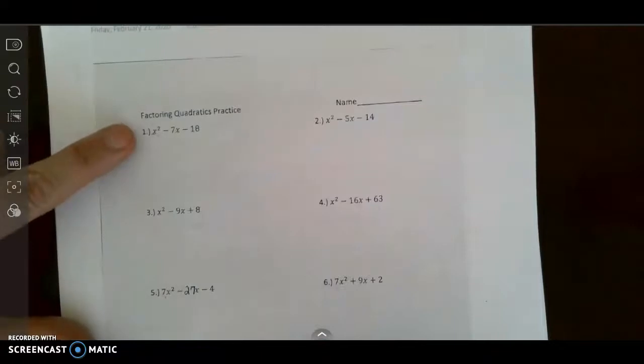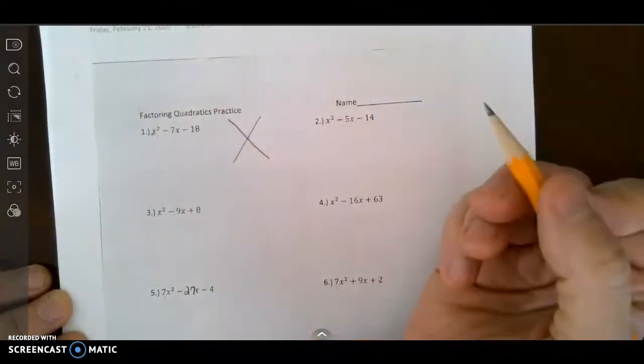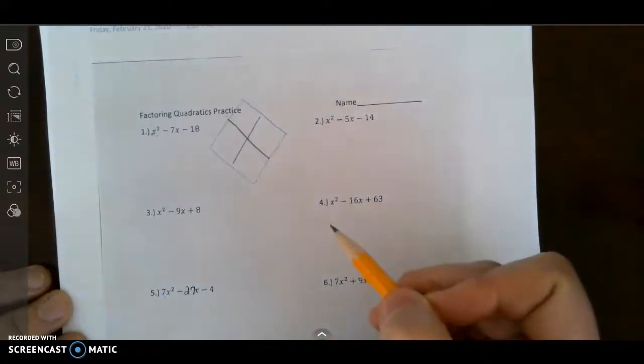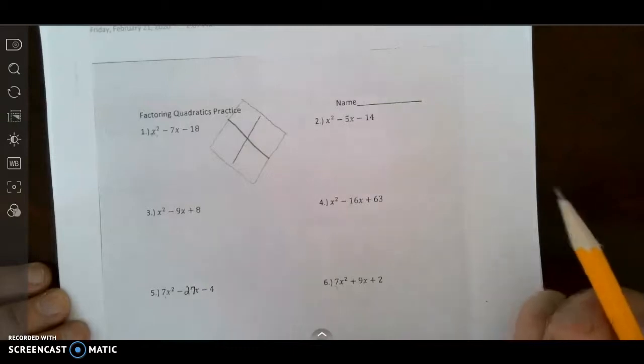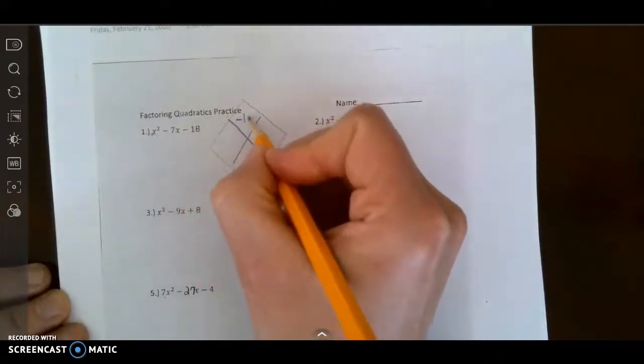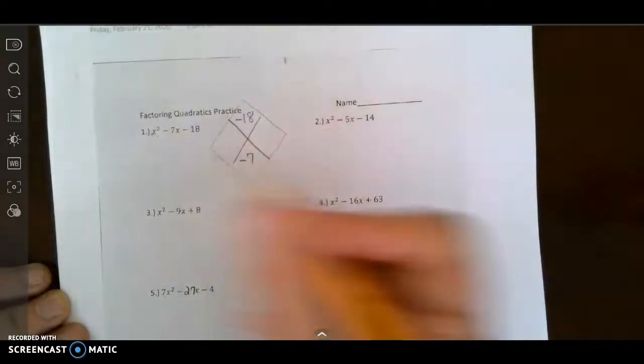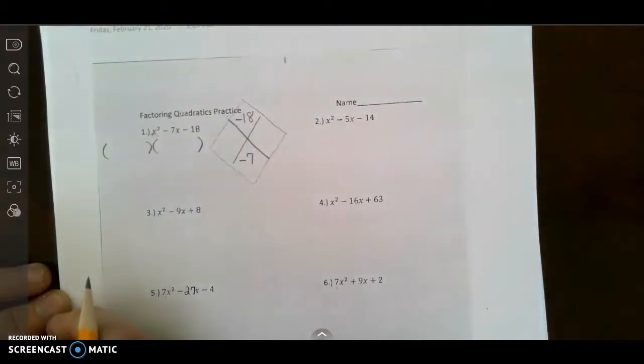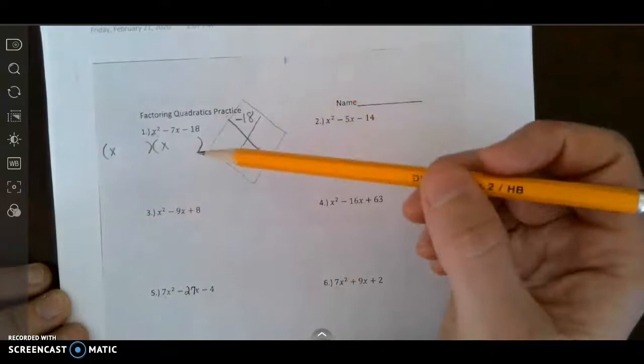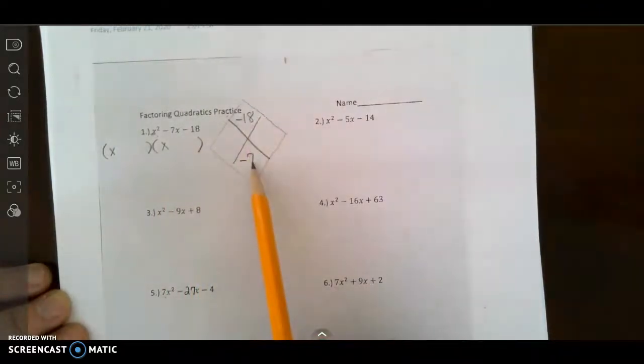So let's talk about how to do ones like number 1. When I don't need a leading coefficient, I teach a method called the diamond method. I usually just draw an x, and in the top of the diamond I put the number that I want to get a product of, which is a product of negative 18, and then in the bottom I put the number I want to have a sum of, because you're going to have two binomials. We know that for x squared each of these is going to be x, and then we want the product to be negative 18 so whatever these numbers are have to give us a product of negative 18 and a sum of negative 7.